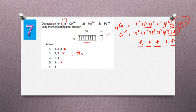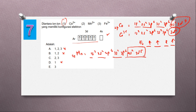Mn nomor atomnya 25. Konfigurasinya: 1s2, 2s2, 2p6, 3s2, 3p6, 4s2, 3d5. Elektron valensinya 4s2, 3d5. Untuk Mn2+, berkurang 2 di 4s, jadi tinggal 1s2, 2s2, 2p6, 3s2, 3p6, 3d5.